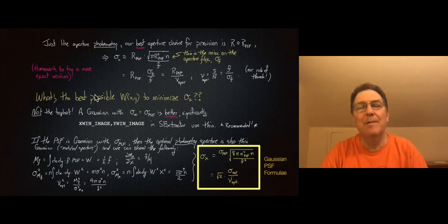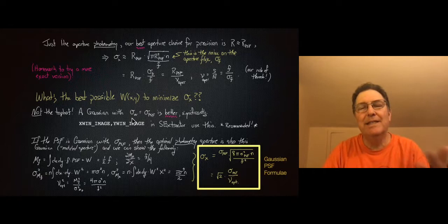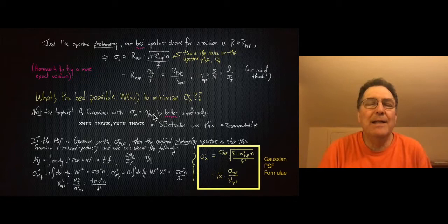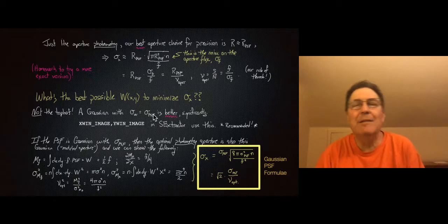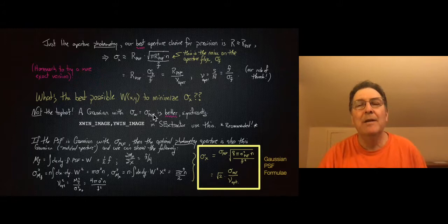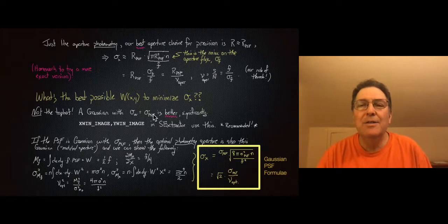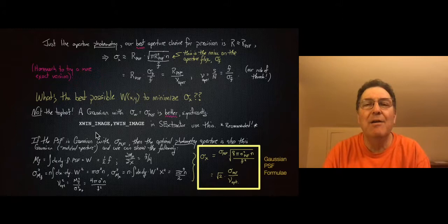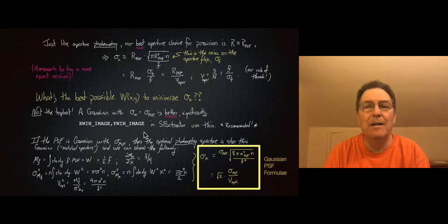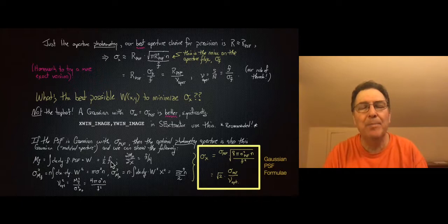Users of Emmanuel Bertin's SExtractor will recognize X_WIN and Y_WIN, which are precisely these Gaussian-windowed aperture centroids — I recommend using them. They're close to optimal in most cases. For a Gaussian PSF with a matching Gaussian window, σ_x equals the PSF size divided by an optimized significance, with a factor of √2 appearing in the formula.